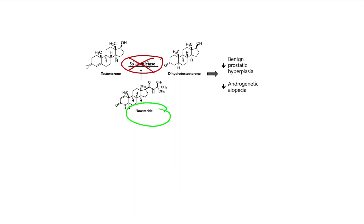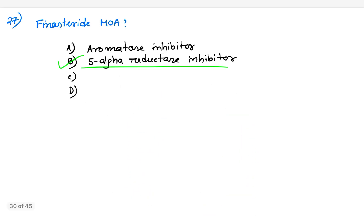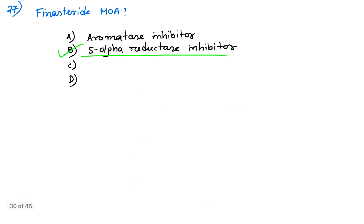This drug finasteride inhibits the enzyme 5-alpha reductase. By inhibiting this 5-alpha reductase, it decreases the level of active form of testosterone, that is dihydrotestosterone, and it decreases benign prostatic hyperplasia. So this is the mechanism of action. It inhibits 5-alpha reductase and decreases the level of dihydrotestosterone, active form of testosterone.